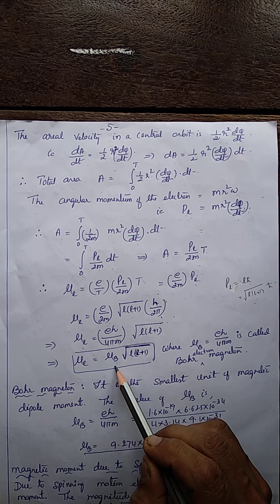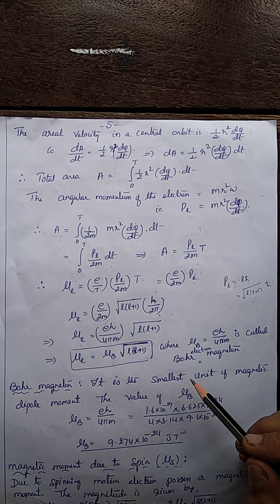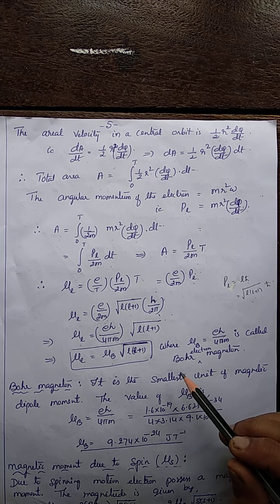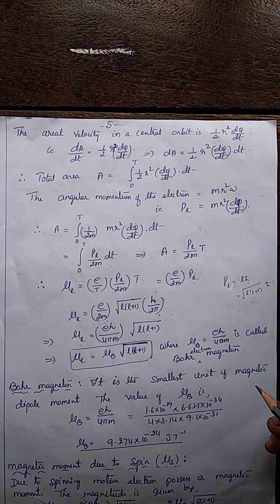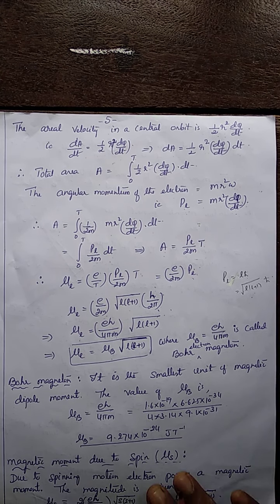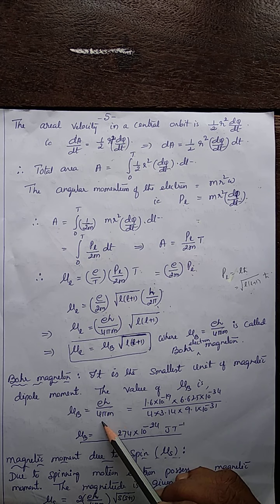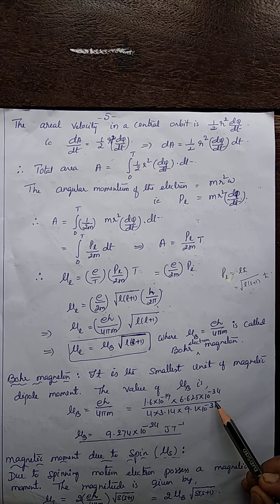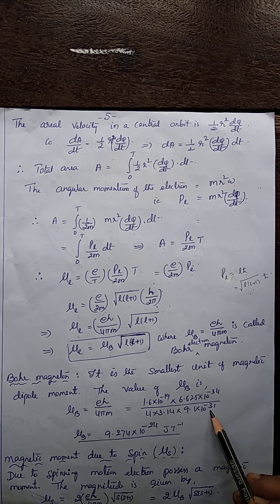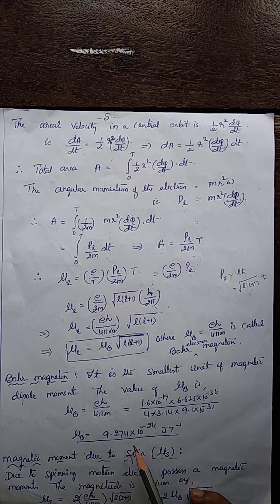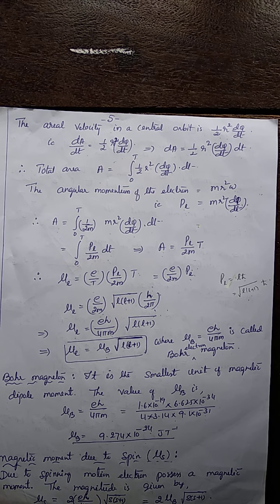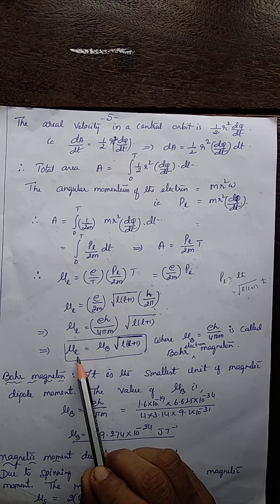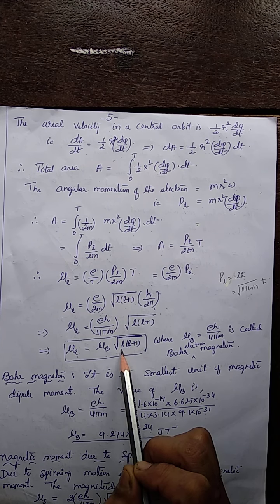The constant eH/4πm is taken as μB, known as the Bohr magneton — the smallest unit of magnetic dipole moment. Substituting e = 1.6×10⁻¹⁹, h = 6.625×10⁻³⁴, 4π, and the mass of the electron m, we get μB = 9.274×10⁻²⁴ J/T. Hence the orbital magnetic moment is μL = μB√(L(L+1)).